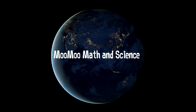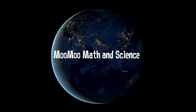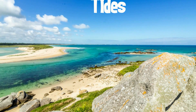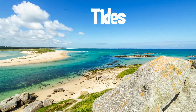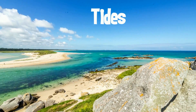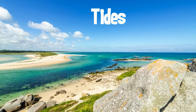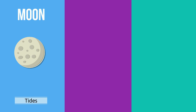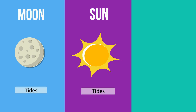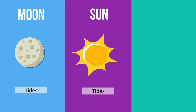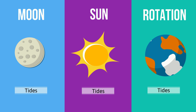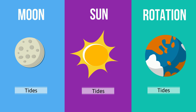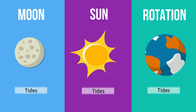Welcome to MooMooMath and Science. In this video, let's take a look at what causes tides. Tides are the rise and fall of sea levels caused by three items: the gravitational force of the moon, the gravitational force of the sun, and the rotation of the earth. Let's take a look and see how these three items can cause tides.